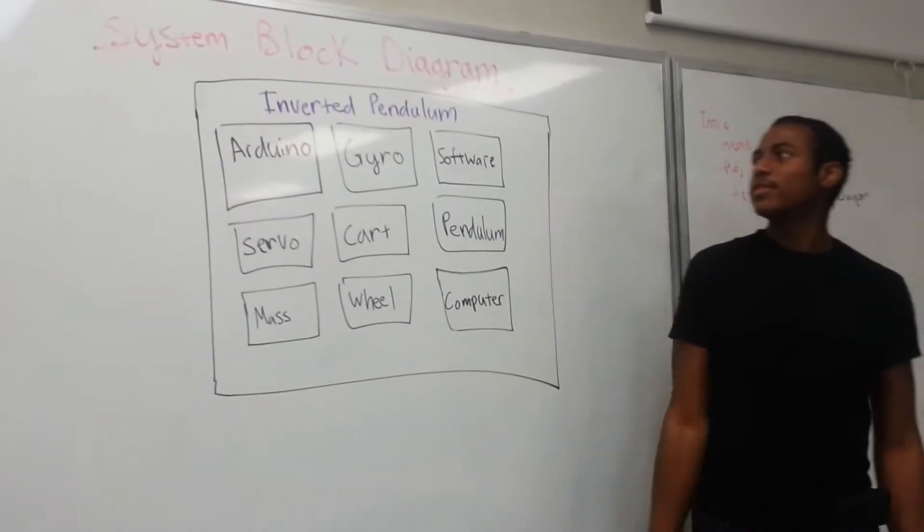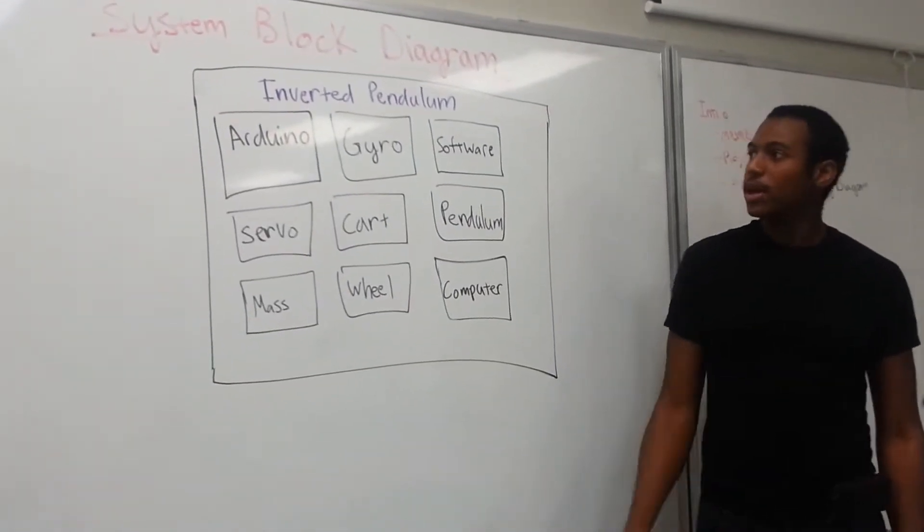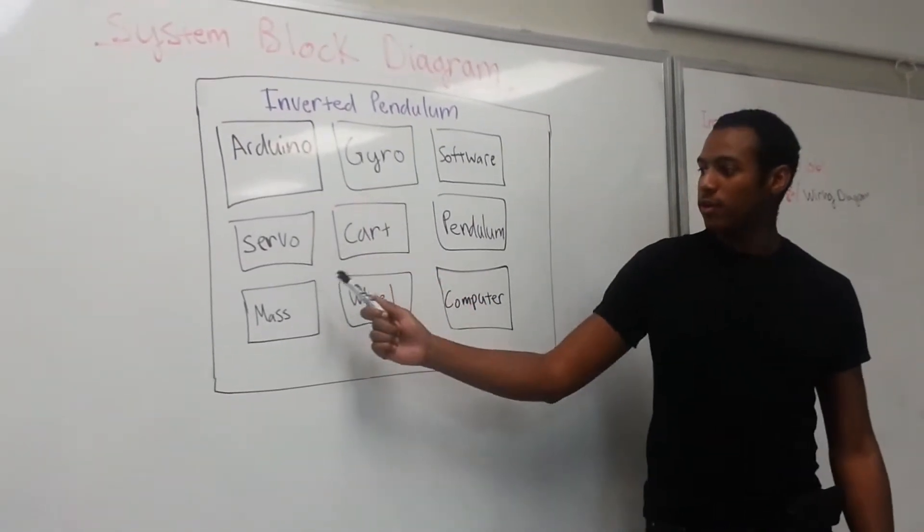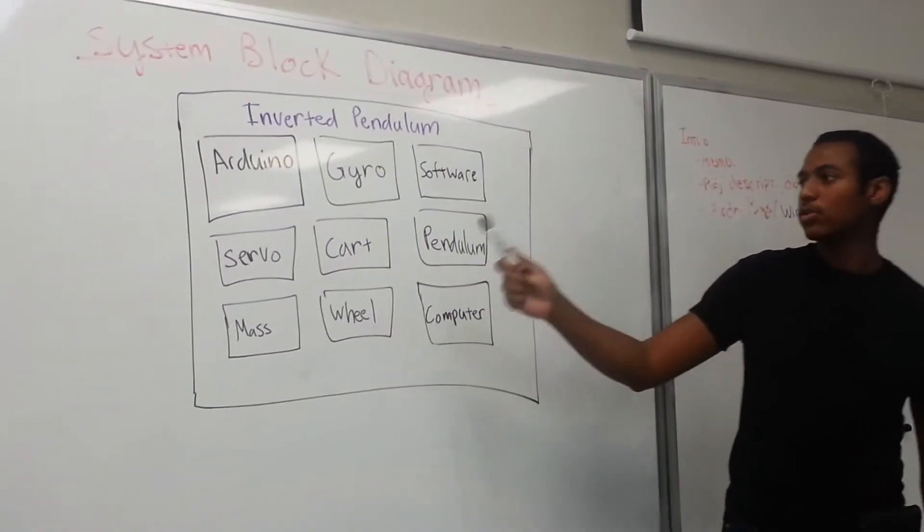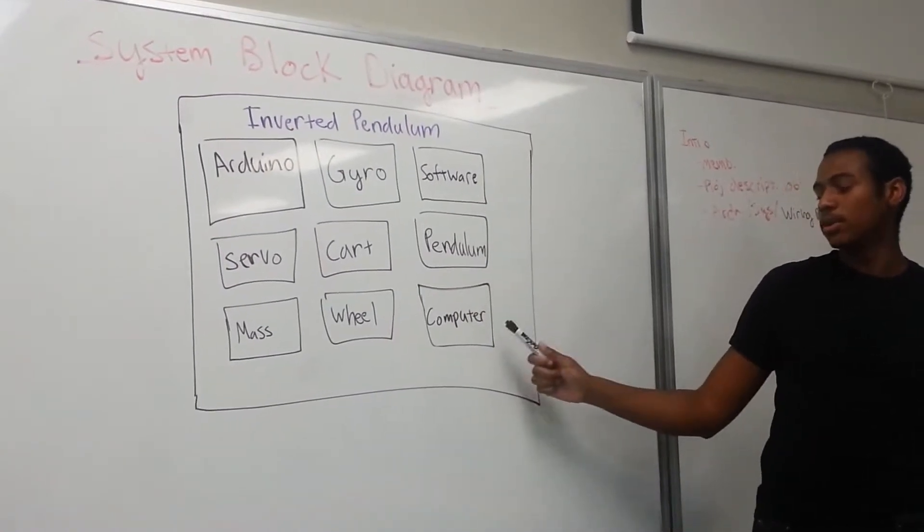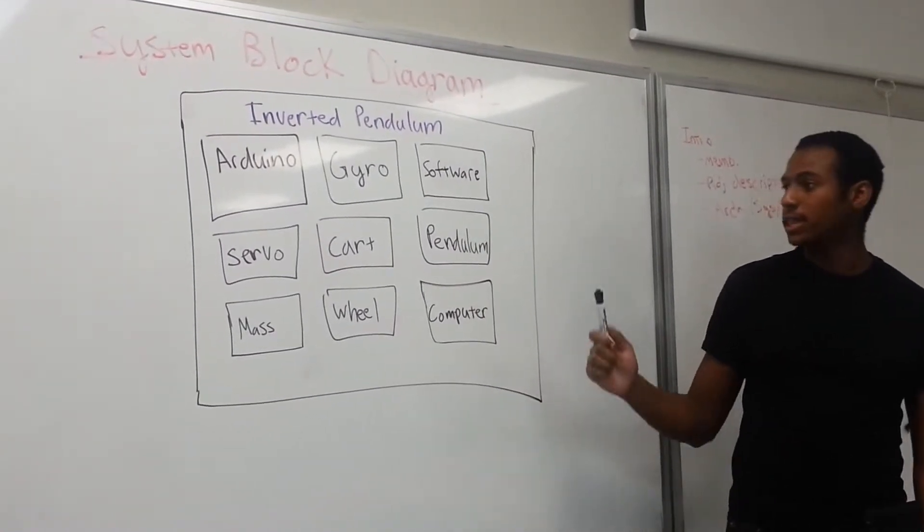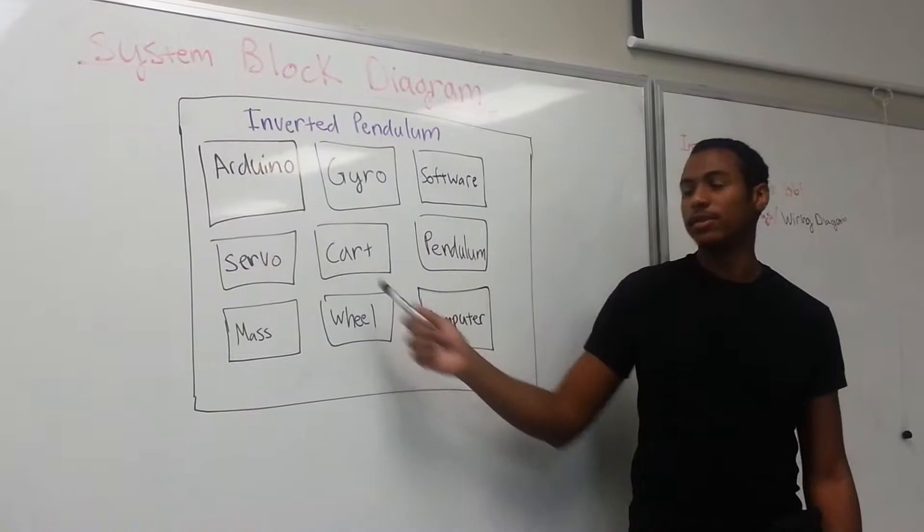So here we have our system block diagram for our inverted pendulum. This consists of the Arduino, the servo, the mass, the wheel, the cart, the gyro, the software which will control Arduino, the pendulum, and the computer. It is also worth noting that the computer will supply the power to the rest of the system.